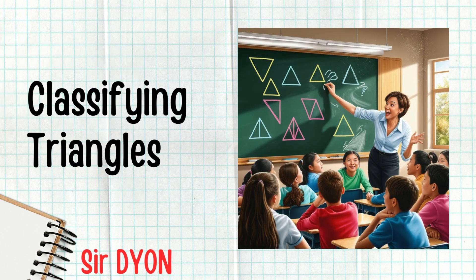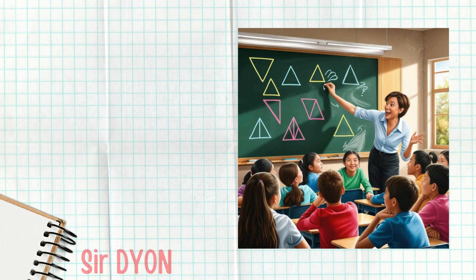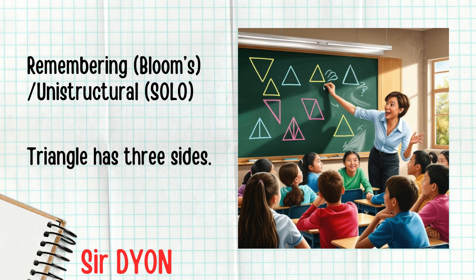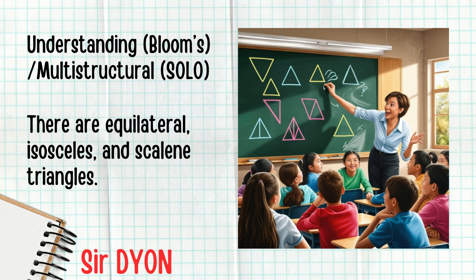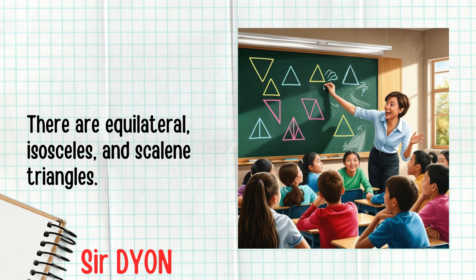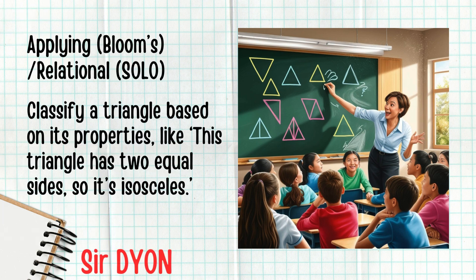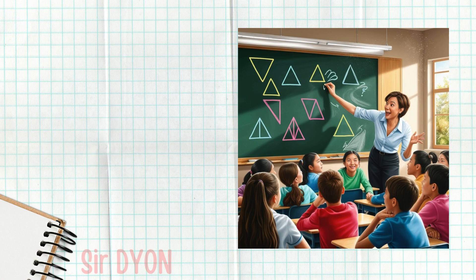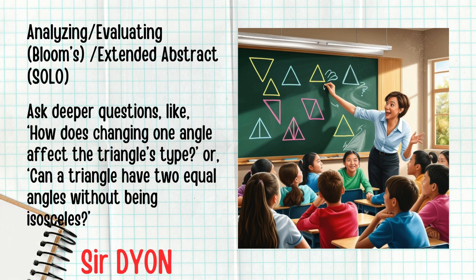Let's use an example to make this clearer: classifying triangles. At remembering/unistructural, you know a triangle has three sides. At understanding/multistructural, you know there are equilateral, isosceles, and scalene triangles. At applying/relational, you can classify a triangle based on its properties — like, this triangle has two equal sides, so it's isosceles. At analyzing/evaluating/extended abstract, you can ask deeper questions like: how does changing one angle affect the triangle's type, or can a triangle have two equal angles without being isosceles?